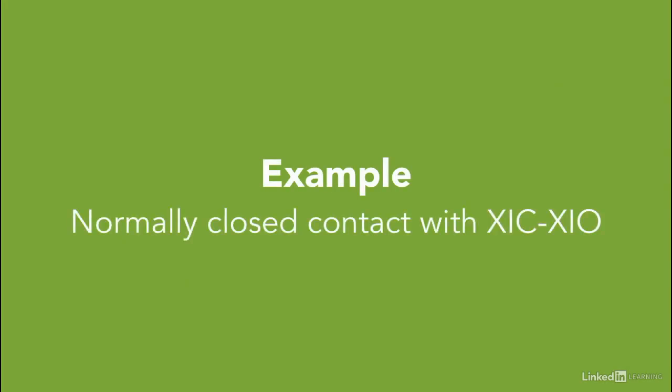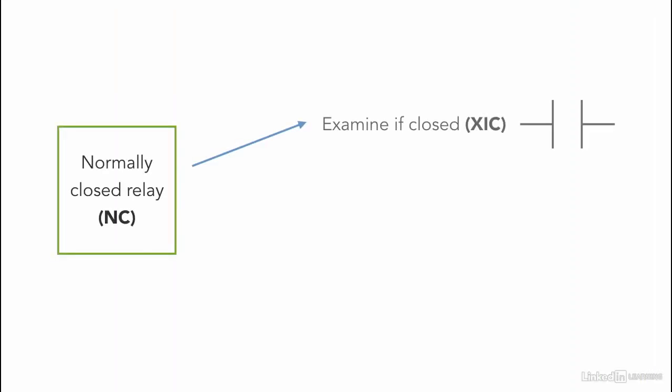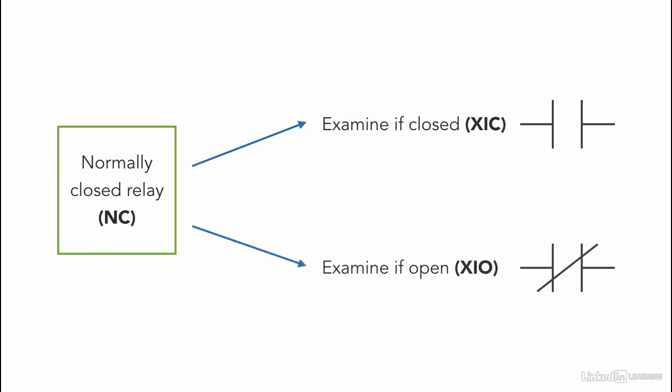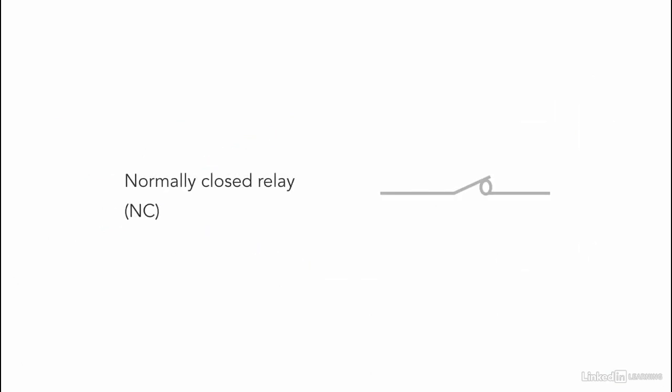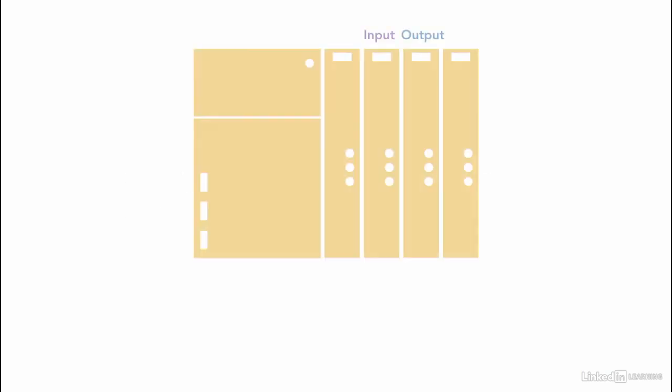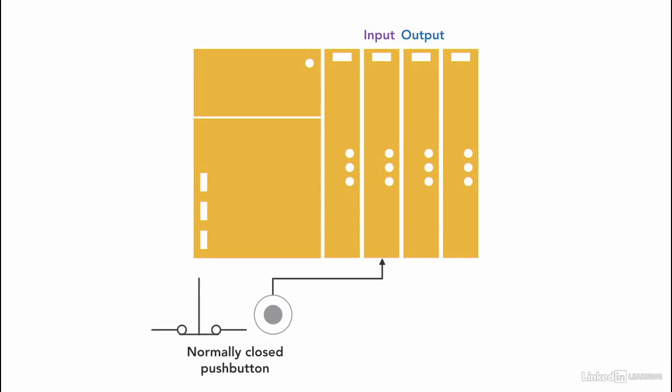We'll take the same previous example but use a normally closed contact instead. Using a normally closed relay and having two different instructions in the PLC program — examine if closed (XIC) and examine if open (XIO) — a normally closed push button is connected to an input module in the PLC, and a red light is connected to the output module.